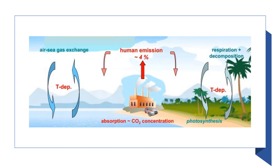The residence time of carbon dioxide in the atmosphere is about 100 years, meaning it takes around 100 years for a CO₂ molecule to leave the atmosphere after it is emitted. The rate of the carbon cycle is the rate at which carbon moves between the atmosphere, biosphere, oceans, and geosphere. The carbon cycle is affected by natural processes like photosynthesis, respiration, decomposition, and weathering, as well as human activities such as fossil fuel combustion, deforestation, and land use change.